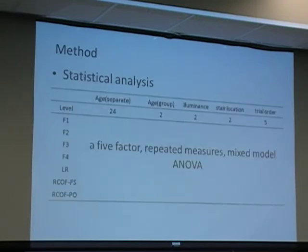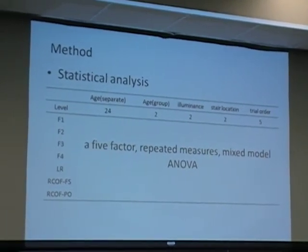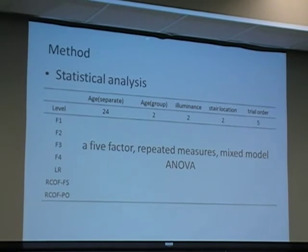A five-factor repeated measures mixed model ANOVA was conducted. These five factors are: age as a repeated factor with 24 levels, age group with two levels, two levels of illuminance, two levels of stair location, and five levels of trial order. Because under every condition there are five trials, the level is five.